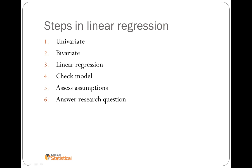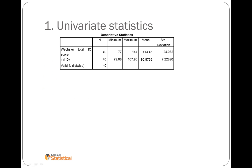Let's start with the basics of what we need to go through in linear regression. The first step is to look at the univariate, followed by the bivariate, then to look at the linear regression output, check the model, assess the assumptions, and answer the research question.